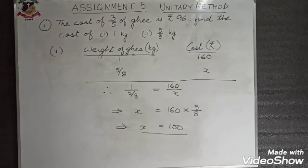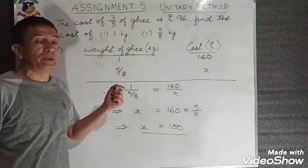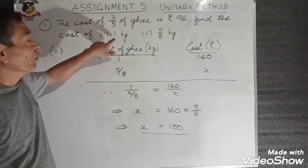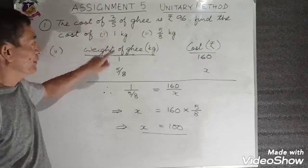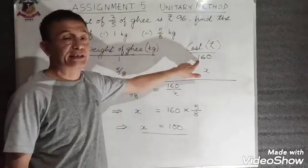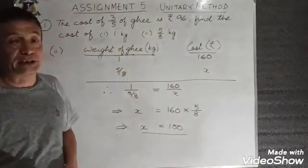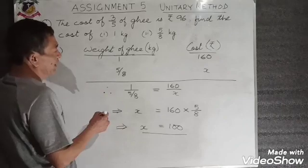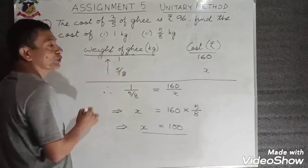Moving on to the second part of the sum where we have to find the cost of 5/8 kg of ghee. We already found from the first part that 1 kg of ghee costs 160 rupees. Now I have to find out what 5/8 kg is going to cost. For the arrowhead, 1 is more because 5/8 is a proper fraction, so the arrowhead moves towards 1.